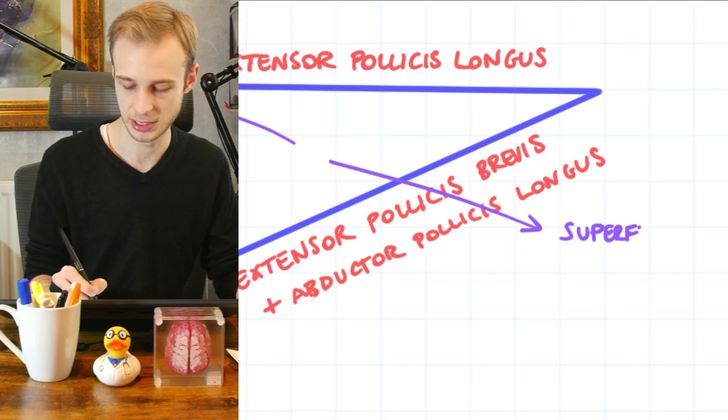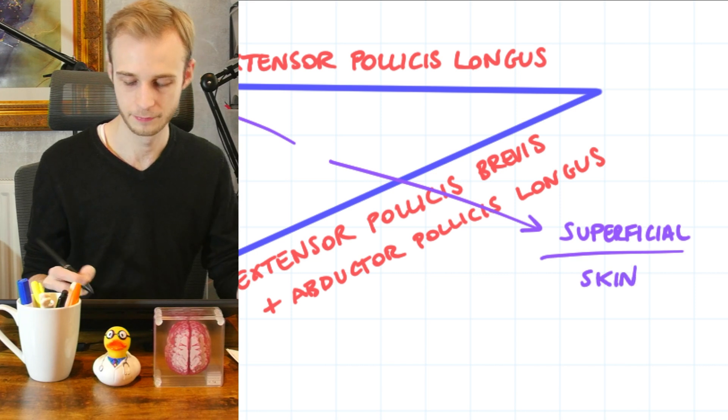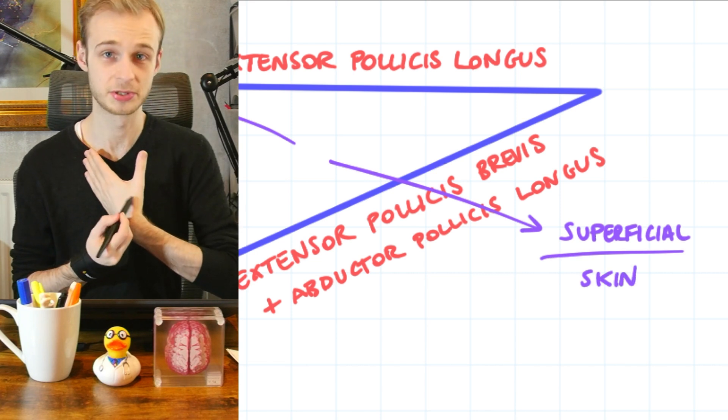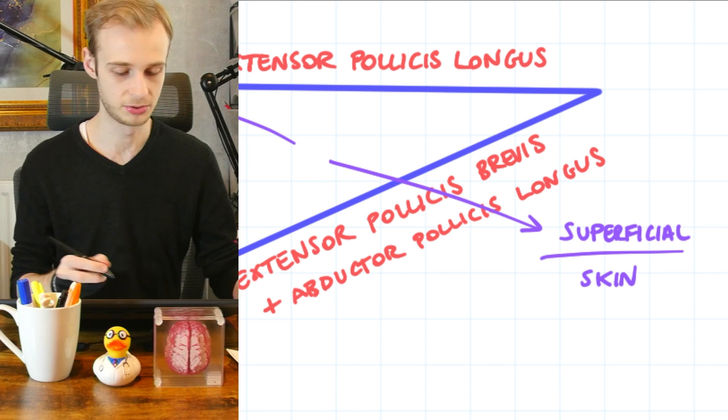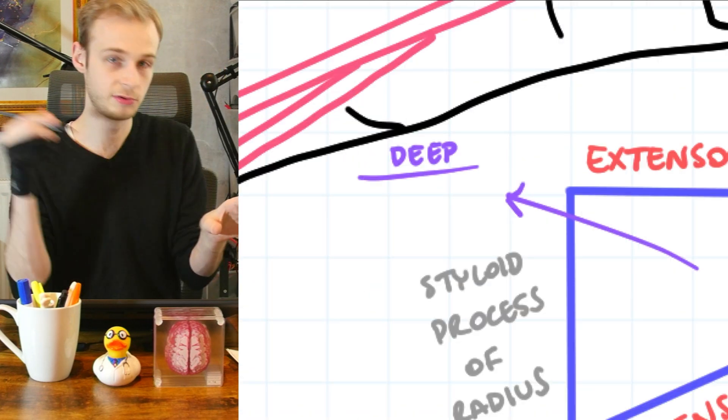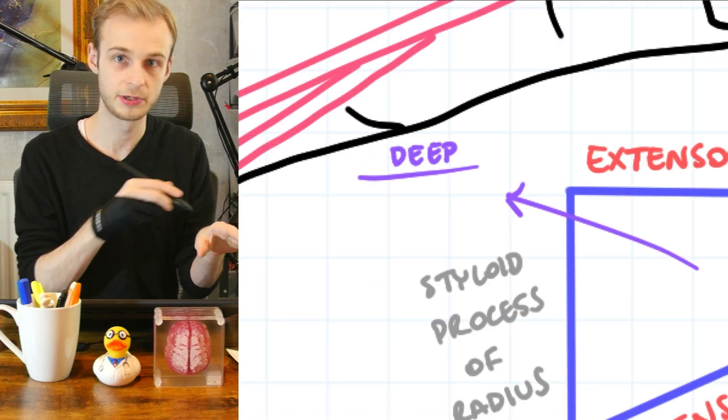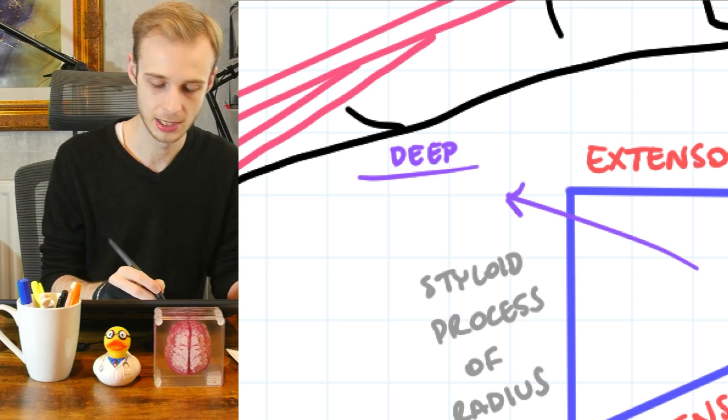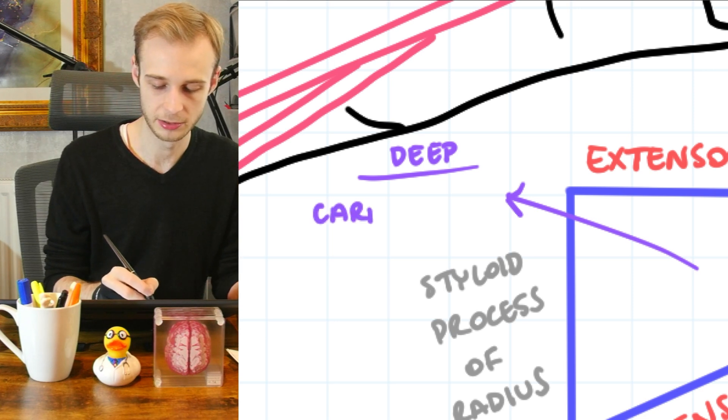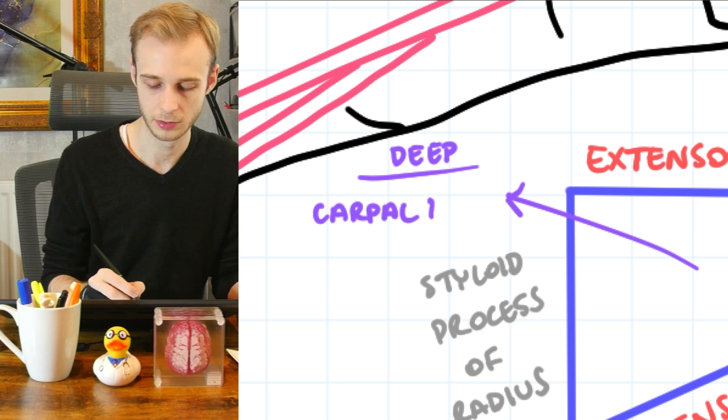So let's just label those up. So superficially, we just have the skin. Obviously we can see this. We've just got skin overlying this two-dimensional space. As in what we were to find if we were to stick a knife and go deep through that space, through these borders, we have the carpal bones, or the wrist bones.